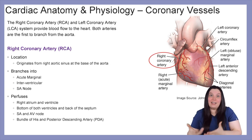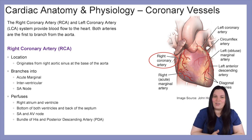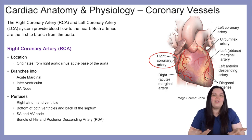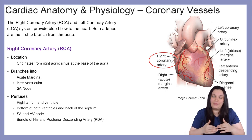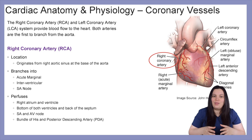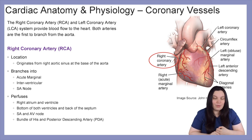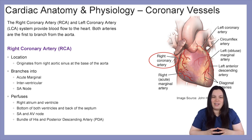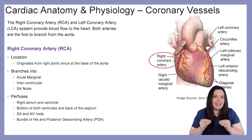Now let's look at the right side of the heart. We have our right coronary artery, the RCA, which originates from the right aortic sinus at the bottom of the aorta. It branches into our acute marginal, interventricular, and the SA node. It perfuses the right atrium, right ventricle, the bottom of both ventricles, the back of the septum, the SA and AV nodes — the heart's electrical system — the bundle of His, and the posterior descending artery. This artery is highly susceptible to blockages.